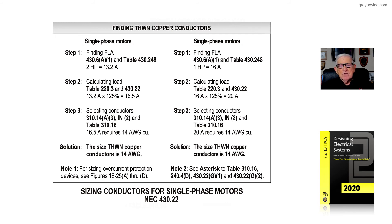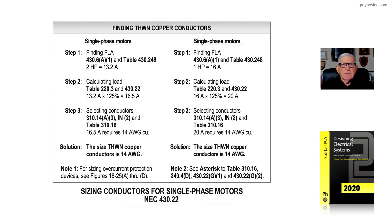That's basically how we size the conductors at 125% of the full-load current of the motor. We've reviewed how to select that full-load current — not the nameplate on the motor.